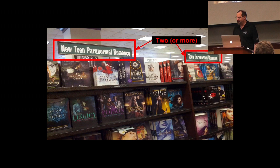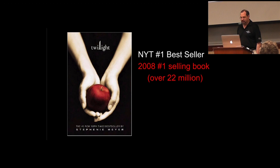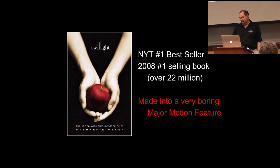I could either lament the decline of Western civilization, or I could put some Groovy vampires in my book and use that as a marketing tool to sell more copies. If you look at Twilight, for example, it was a New York Times number one bestseller — the biggest selling book in 2008, over 22 million copies. It was made into a very boring major motion picture.